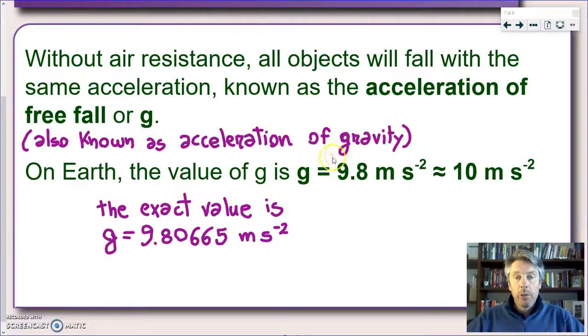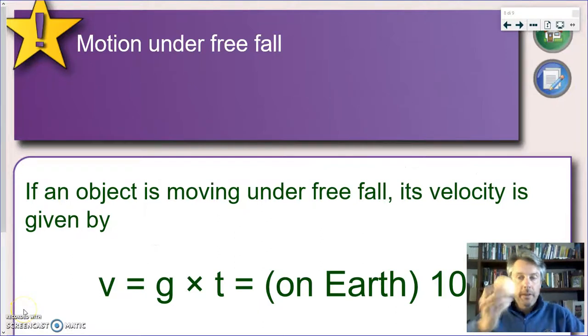On Earth, we have a g of 9.8 meters per second squared, which for most cases we can round up to 10 meters per second squared. And if you're curious about the actual value, it's 9.80665 meters per second squared. So, at this point back to the apple. I'm dropping an apple. I know that if I don't take into account the effect of air resistance, this apple will fall with an acceleration equal to g equal to 9.8 or 10 meters per second squared.